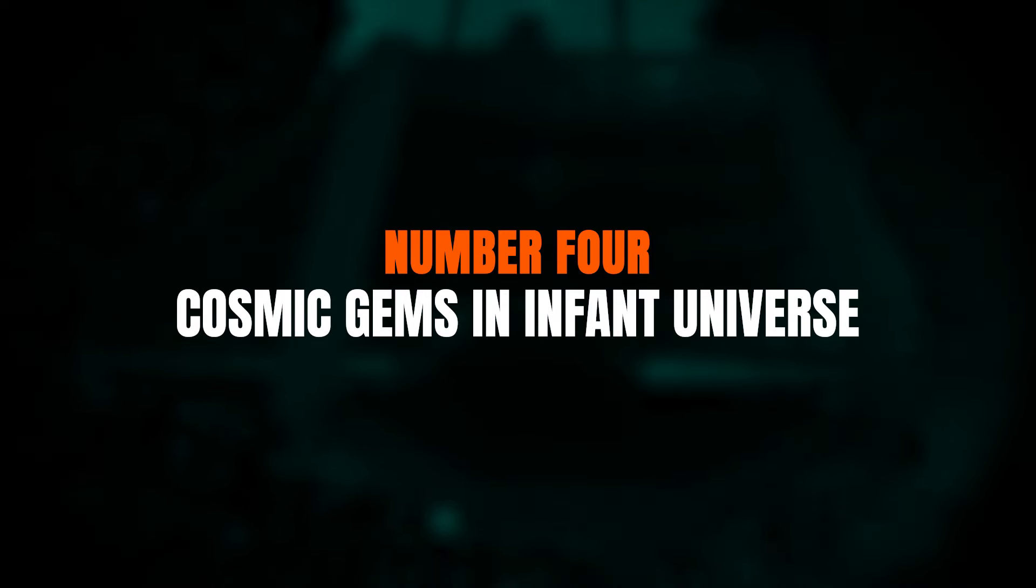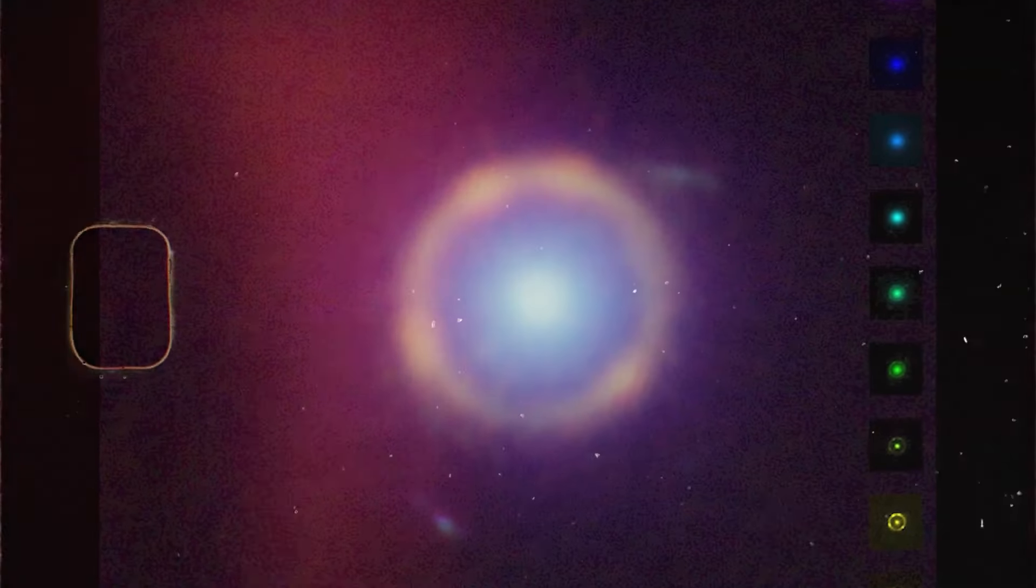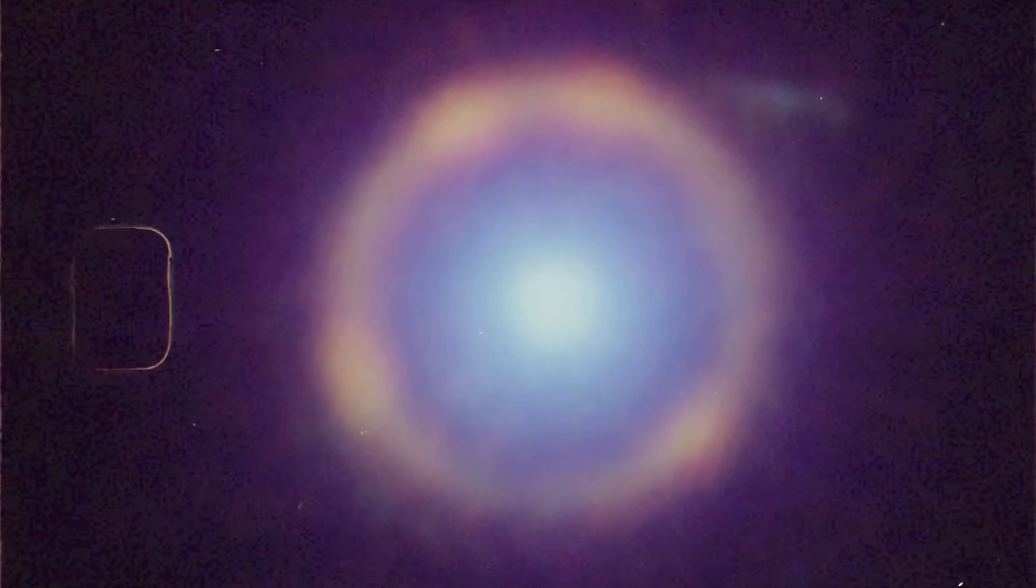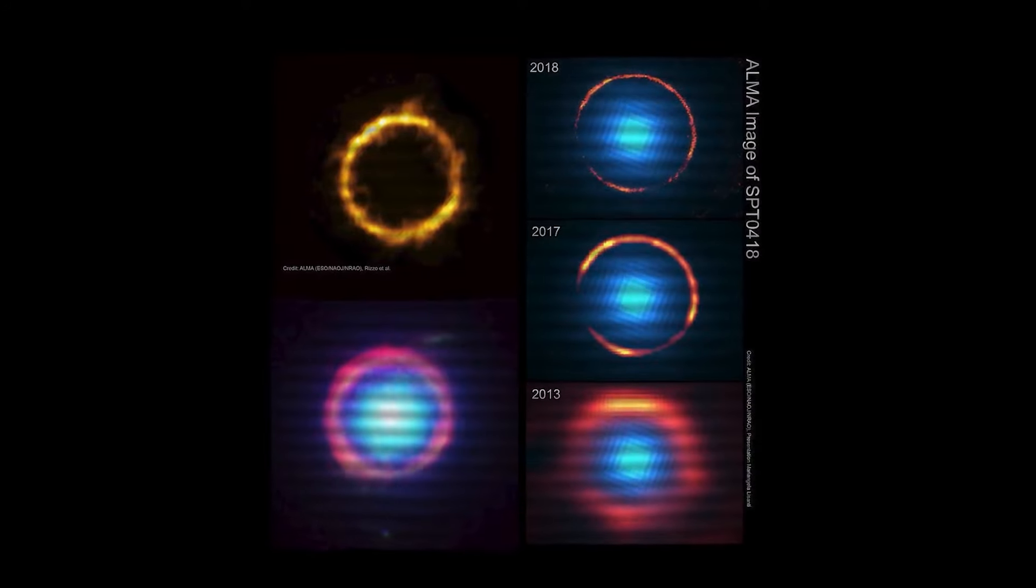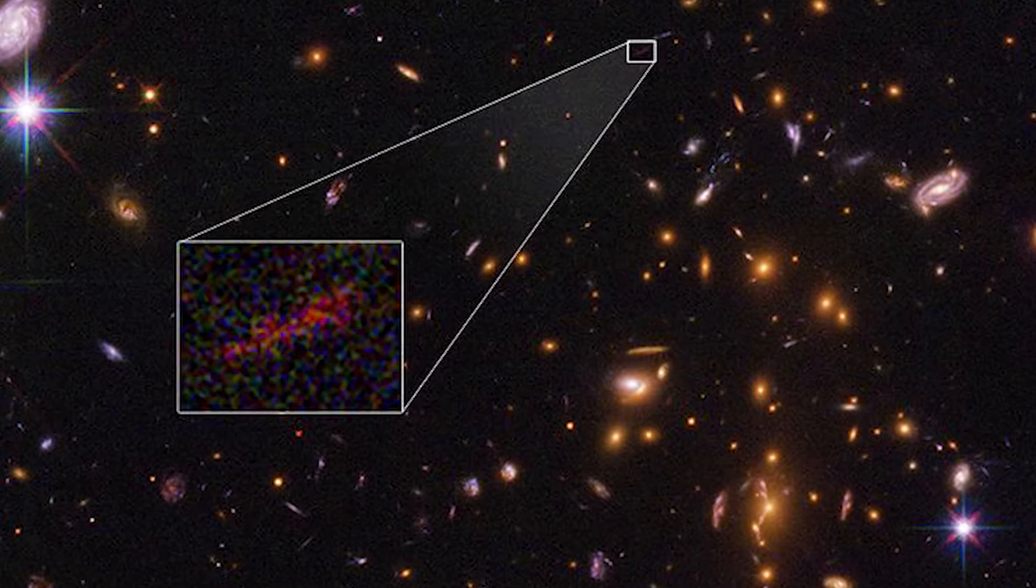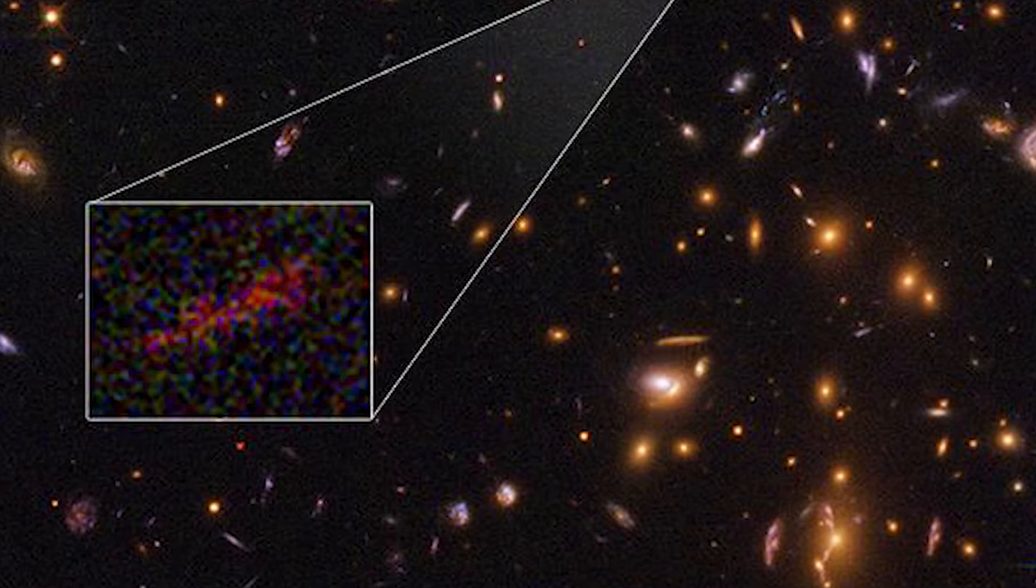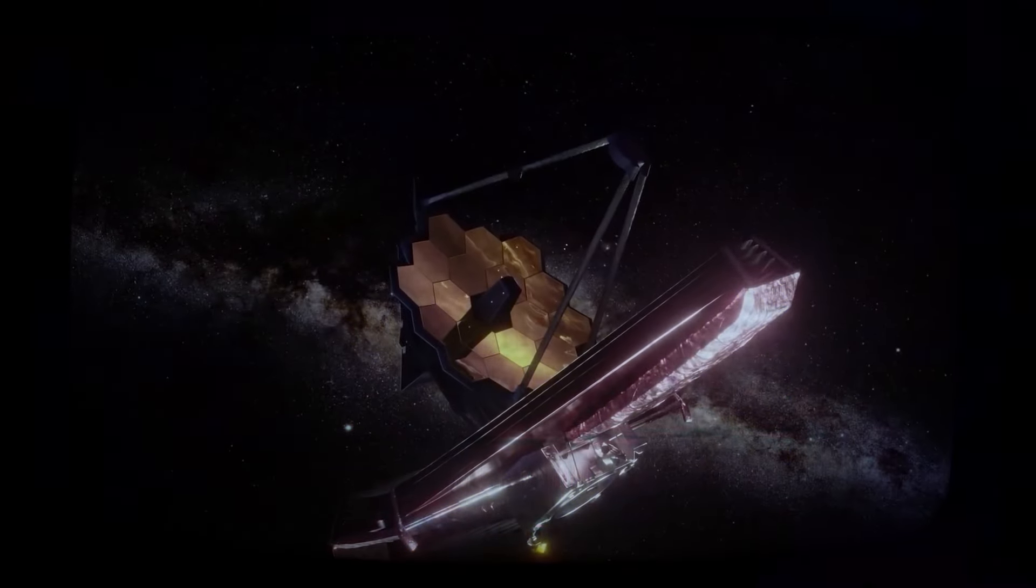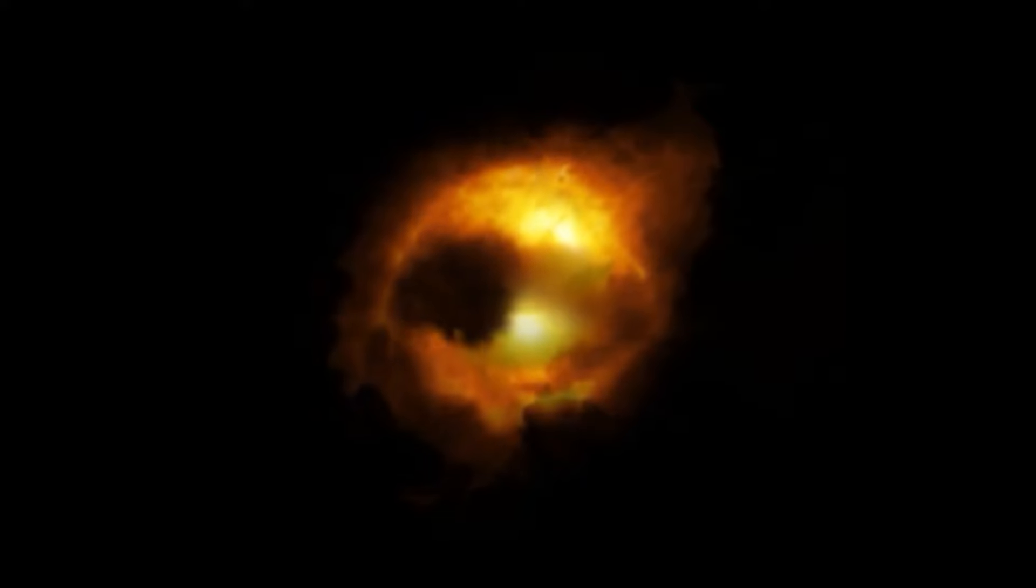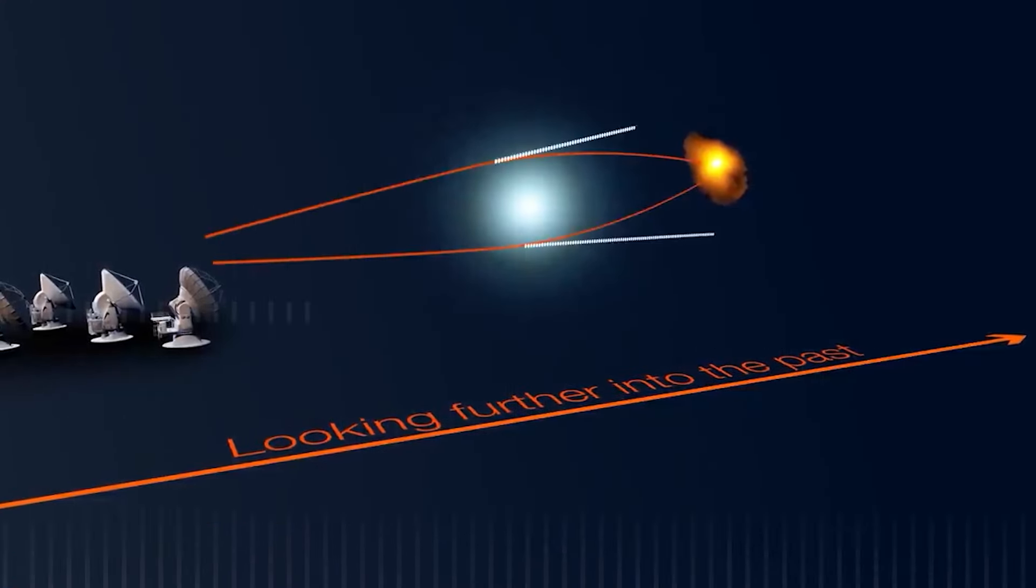Number four, cosmic gems. In infant universe, astronomers have found five massive star clusters in the cosmic gems arc that existed just 460 million years after the Big Bang. The cosmic gems arc, officially designated SPT0615JD1, was initially discovered by the Hubble Space Telescope. This gravitationally lensed infant galaxy is around 13.3 billion light years from Earth.